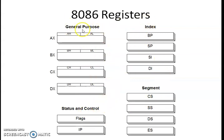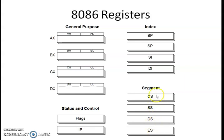The first category is general purpose registers, which includes AX, BX, CX, and DX registers. The second category is index registers, which includes the base pointer, stack pointer, source index, and destination index registers. The third category is segment registers: CS, SS, DS, and ES. The fourth category is status and control registers, which includes the flag register and the instruction pointer.